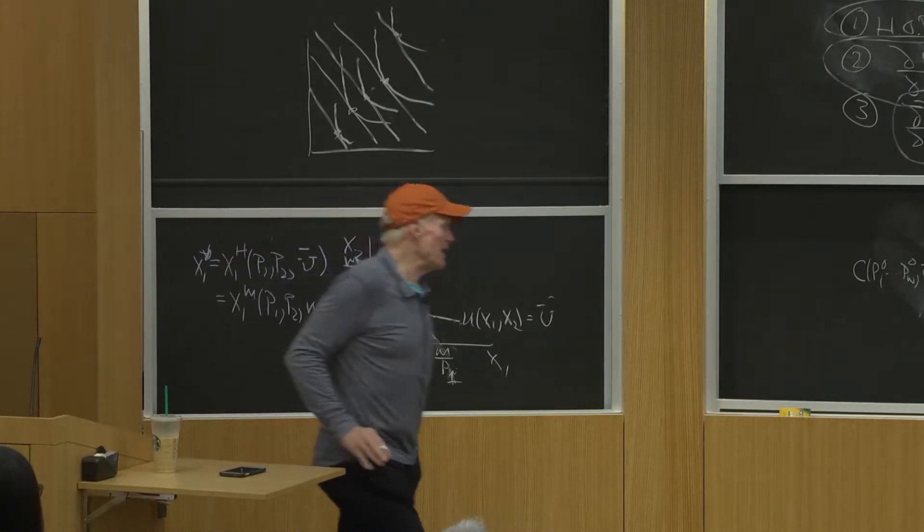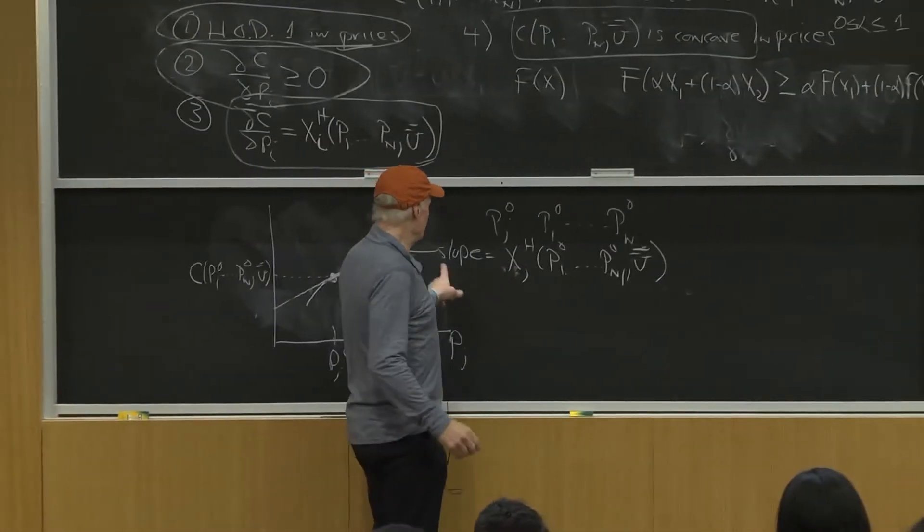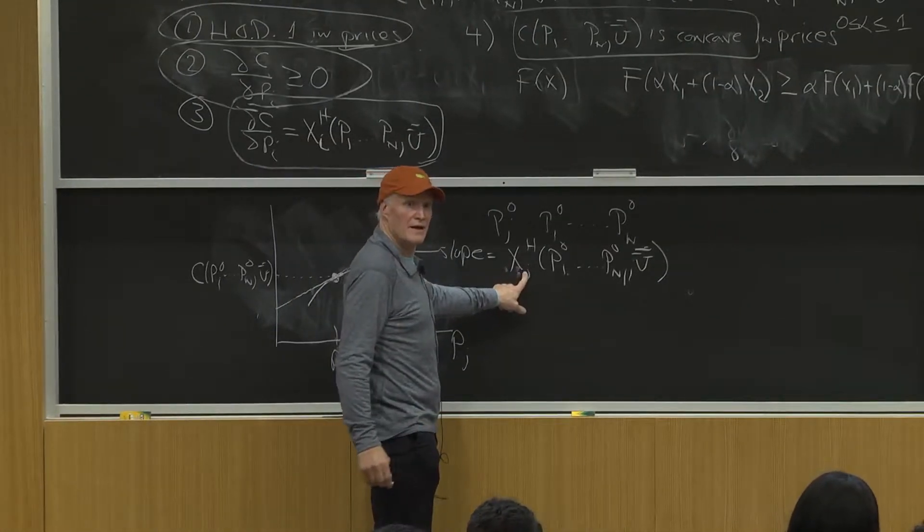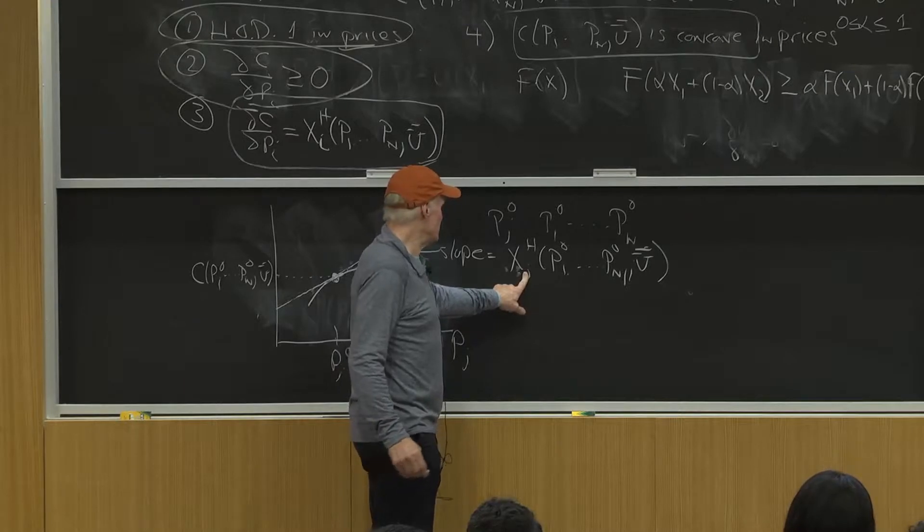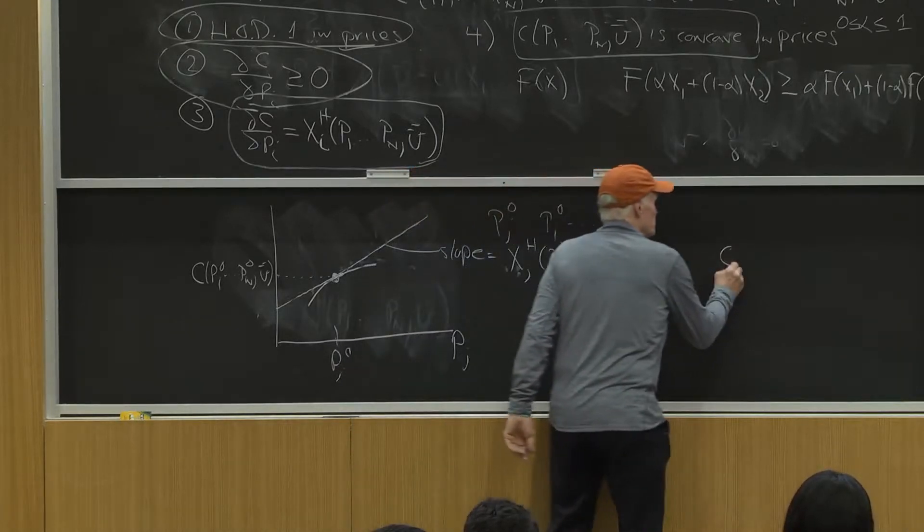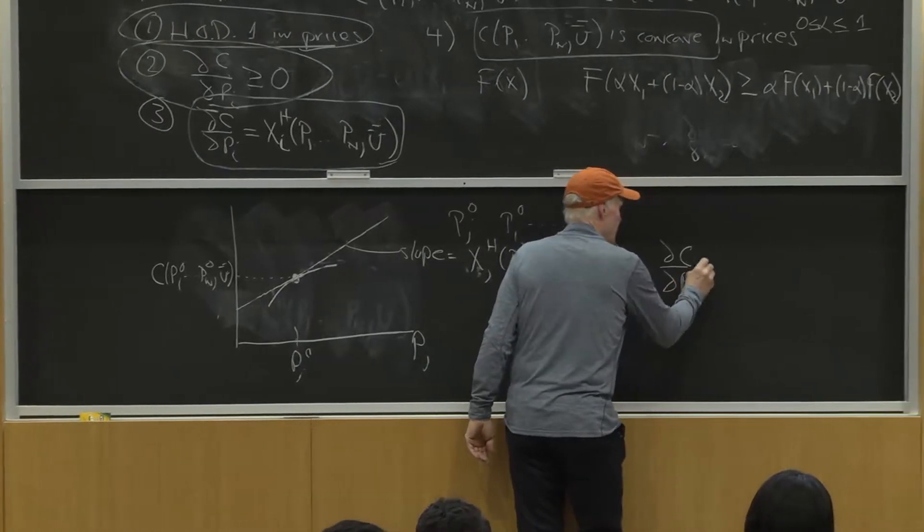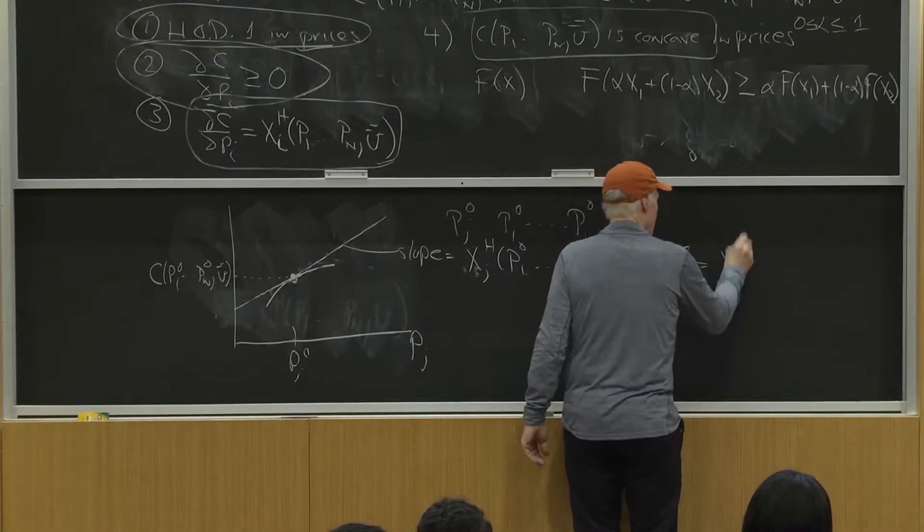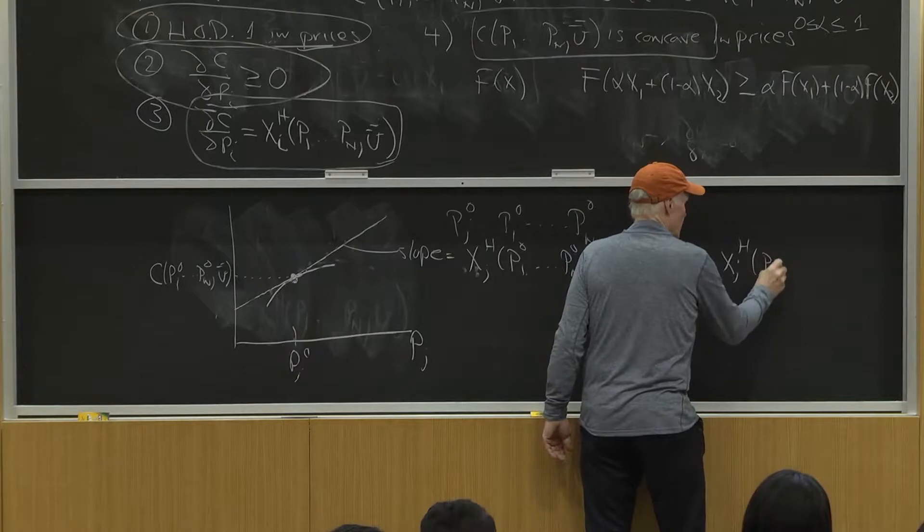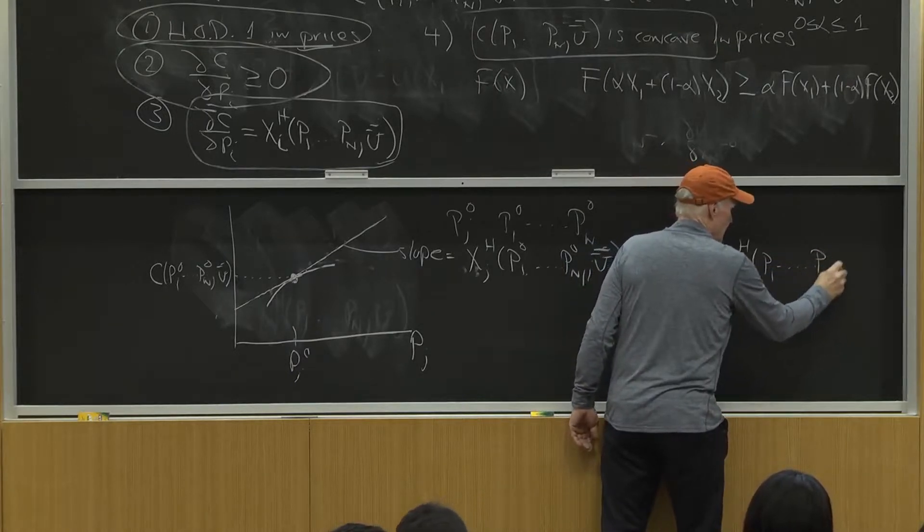Because think about it. The slope is this. So ∂C/∂PJ equals XJH of P1 up to PN, U bar.